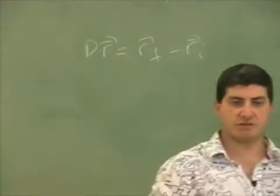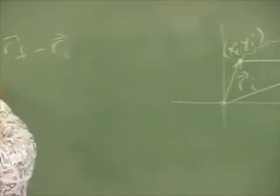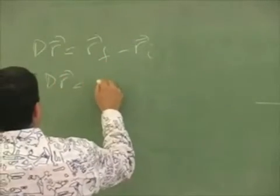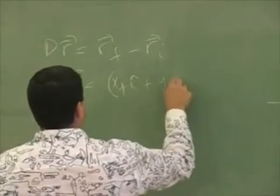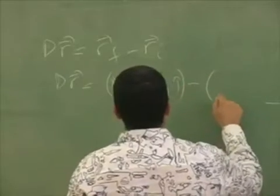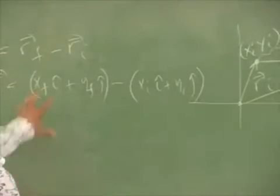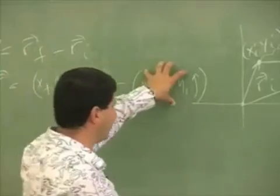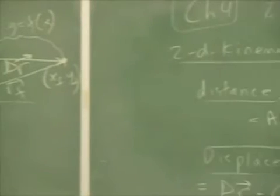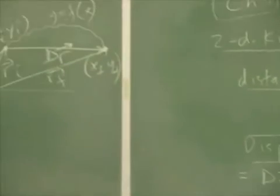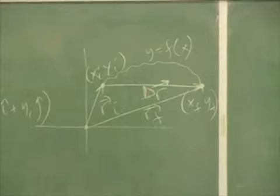Delta-r equals r-final minus r-initial, where r represents the position vector of the car or particle. r is equal to x-final i-hat plus y-final j-hat, minus r-initial which is x-initial i-hat plus y-initial j-hat. This is the final position of the car and this is the initial position. By subtracting them you get the vector delta-r — the subtraction of the final position vector minus the initial position vector.